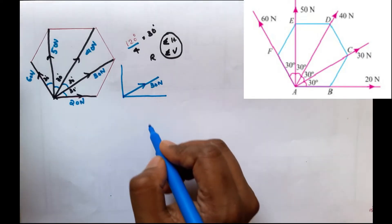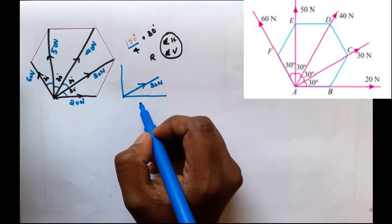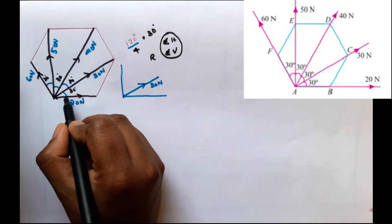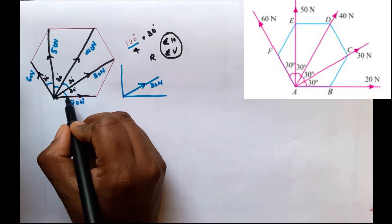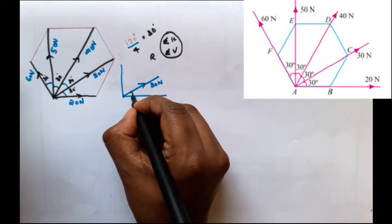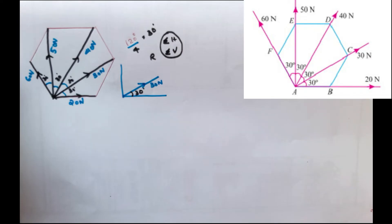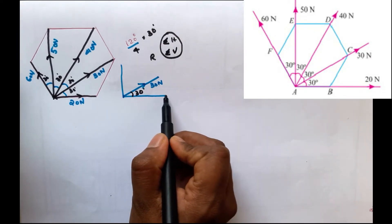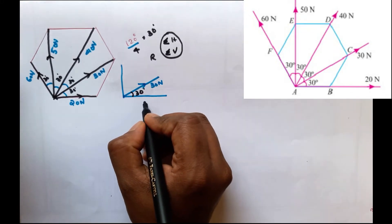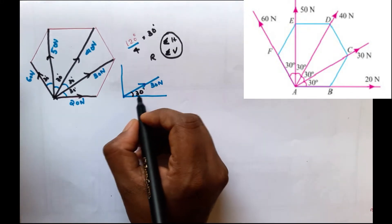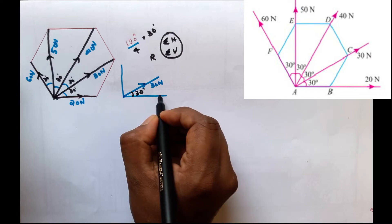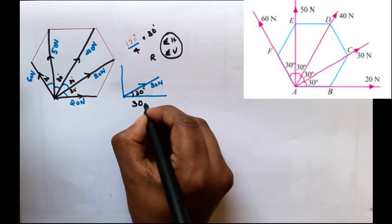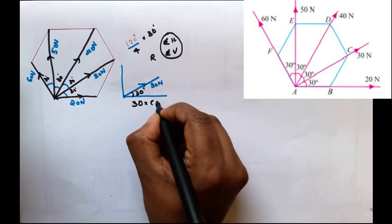How does the 30N force act? It acts along the horizontal axis and the vertical axis, creating an angle of 30 degrees. The horizontal component is the cosine component: 30 cos 30, because this force creates an angle with the horizontal axis.